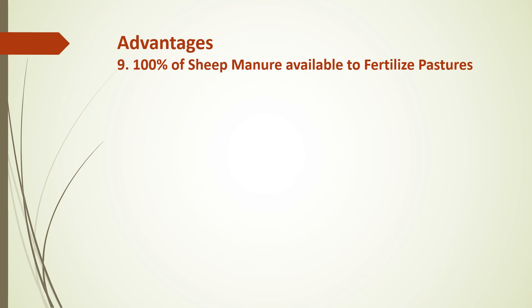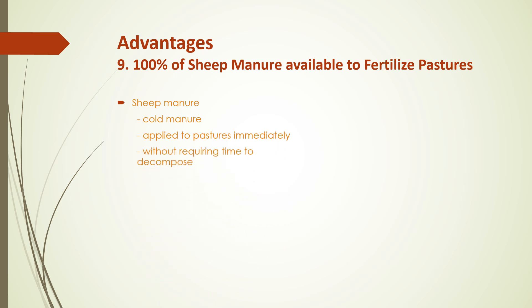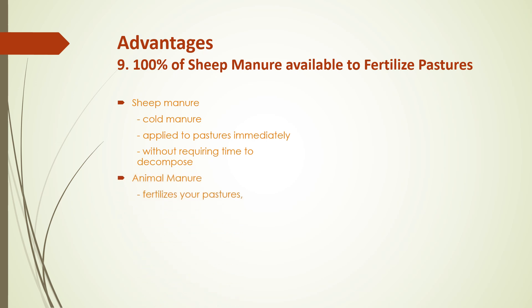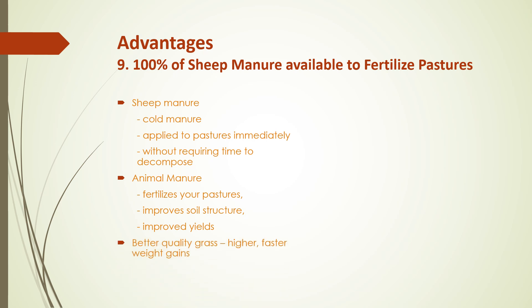The ninth advantage is that 100% of the sheep manure is available to fertilize pastures. Sheep manure is a cool manure, so it can be applied to pastures immediately after removal from below the slotted floor pens without requiring time to decompose. Animal manure not only fertilizes your pastures but also improves the soil structure, thereby leading to improved yields of grass. Better quality grass leads to higher, faster weight gains.